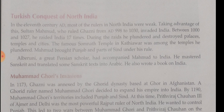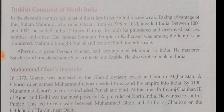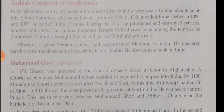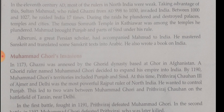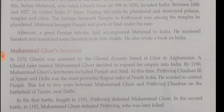Then we discussed about Muhammad Ghori. He came to India and plundered the wealth of India. By 1190, Muhammad Ghori's territories included Punjab and Sindh. At this time, Prithviraj Chauhan III of Ajmer and Delhi was the most powerful Rajput ruler of North India. Muhammad Ghori wanted to control Punjab, which led to war between them. In the first battle of 1191, Prithviraj defeated Muhammad Ghori, but in the second battle of 1192, Muhammad Ghori defeated Prithviraj Chauhan, who later died.